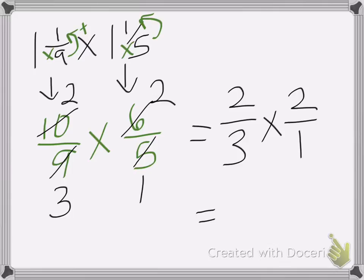So let's multiply it out. 2 times 2 is 4, 3 times 1 is 3. And then you change that back into a mixed number, which would be 1 and 1/3.